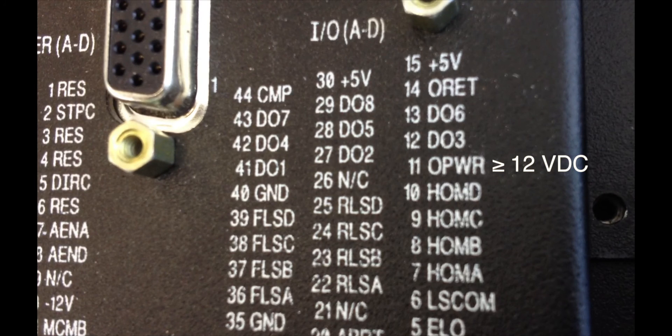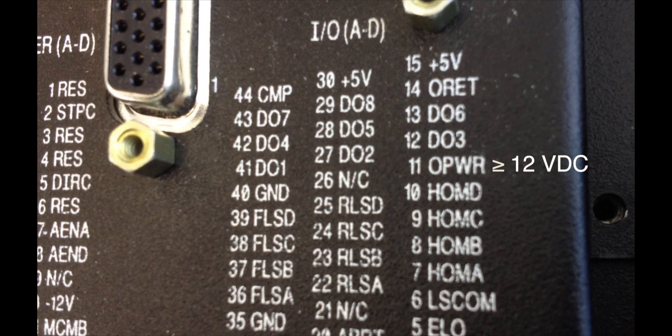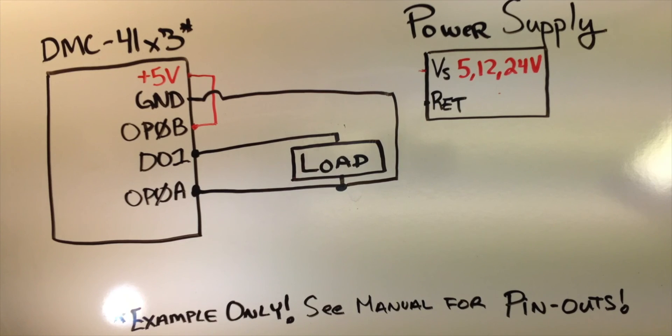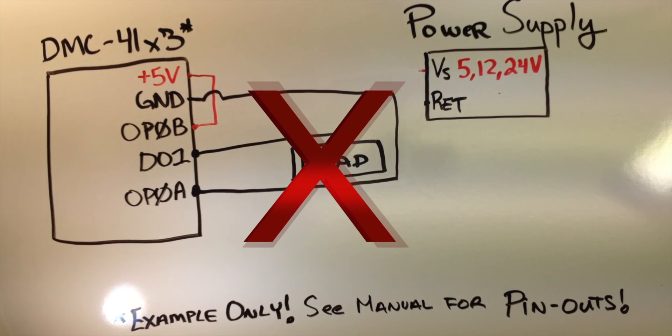Another important distinction is that the high sourcing option has a minimum supply voltage of plus 12 volts, so it cannot be powered using the plus 5 volt reference of the controller.